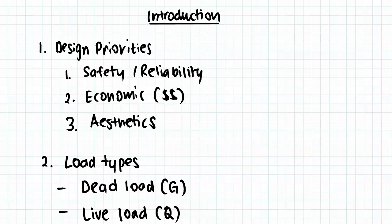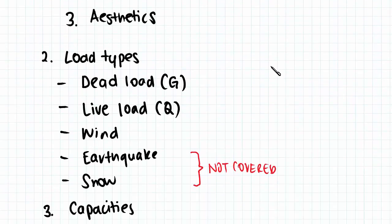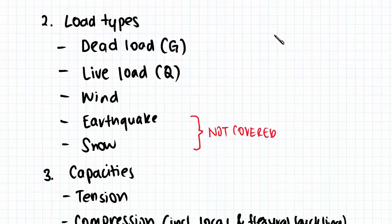Moving on, we're going to look at the load types that structures are expected to experience. The main ones are dead load, denoted as G — a fixed load such as the self-weight of a building — and live loads, denoted as Q, which are dynamic loads such as people in a building or cars on a bridge.